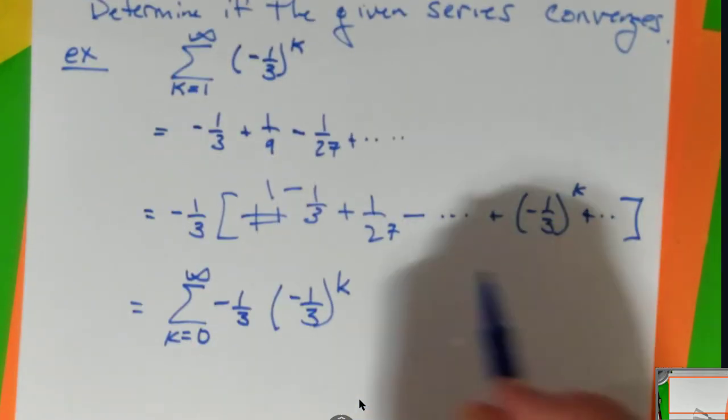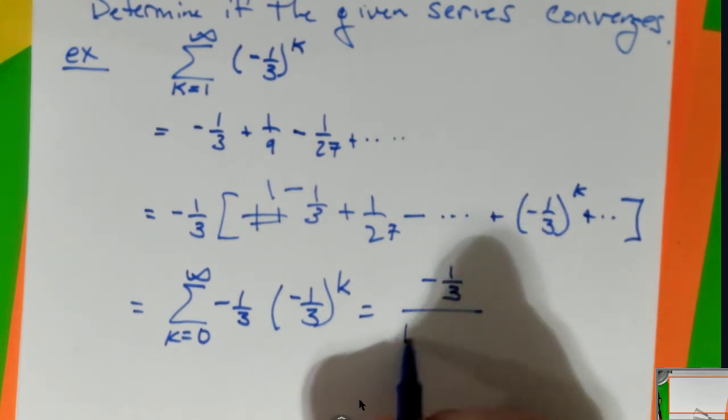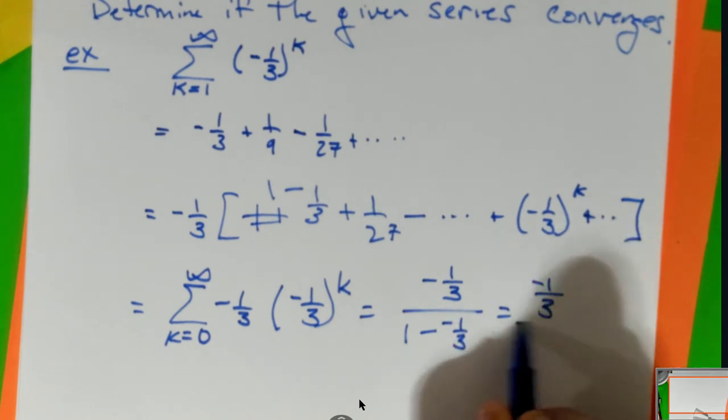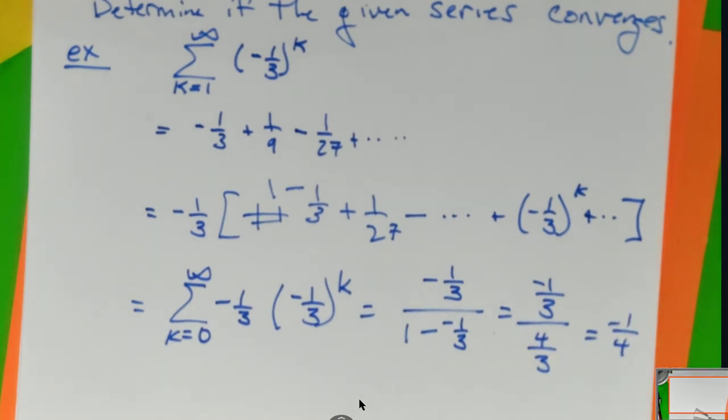Now it's in the right form. The first term is minus a third, one minus common ratio one-third, don't forget the negative like I did, over four-thirds. The thirds simplify out, this sums to negative a fourth.